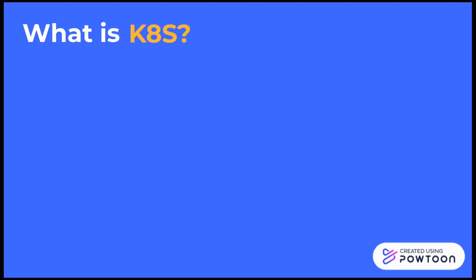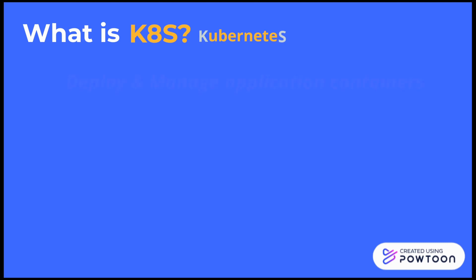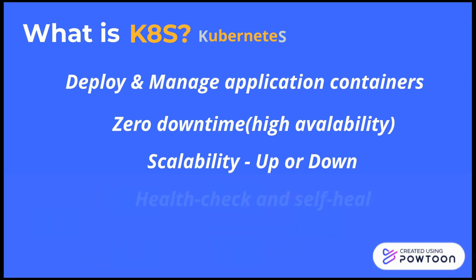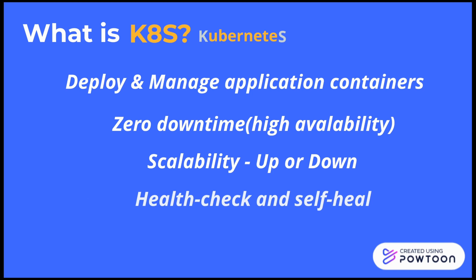Sometimes Kubernetes is referred to as K8s, meaning there are eight letters between K and S in Kubernetes. Kubernetes deploys and manages containerized applications and scales them up or down with zero downtime. It checks container health using liveness and readiness probes — liveness probes determine when to restart a container, and readiness probes determine when a container is ready to start. Kubernetes also has self-healing power: it restarts, replaces, or reschedules containers on failure, and supports rollbacks to older versions.